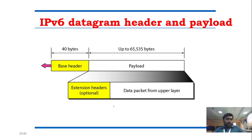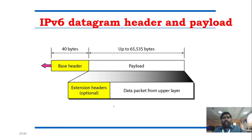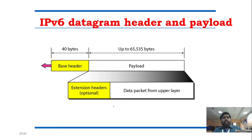Now let's look at the header format. If you compare with IPv4, IPv6 has a lot of new options including better resource allocation. It also supports extension header use — headers can be added as needed. Any functionality that cannot be processed in IPv4 can now be done in IPv6.